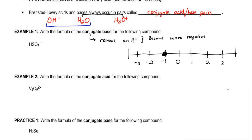So let's remove that H+. So now we're SO4. Because we're going to become a little bit more negative, we fall down to minus 2. So SO4 2 negative would be the conjugate base of HSO4 negative.